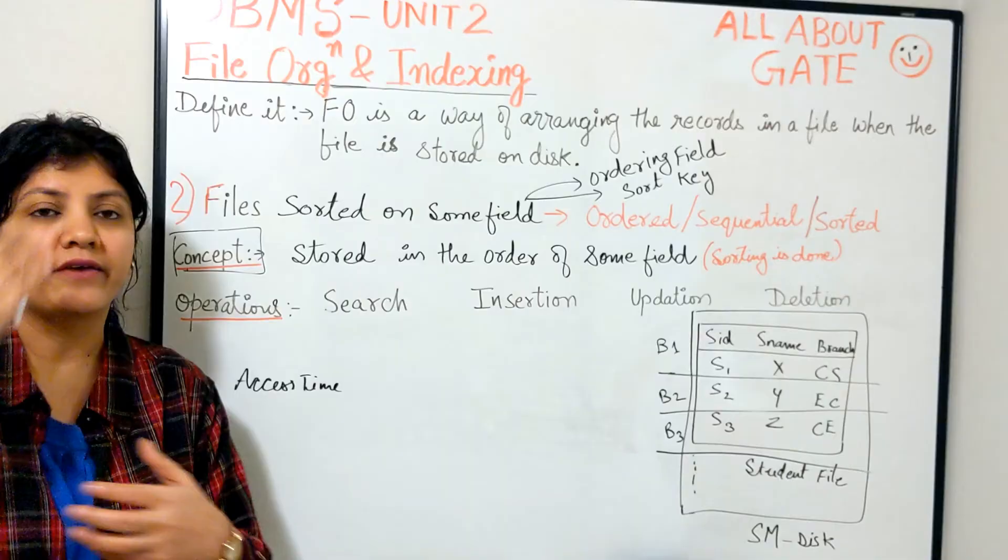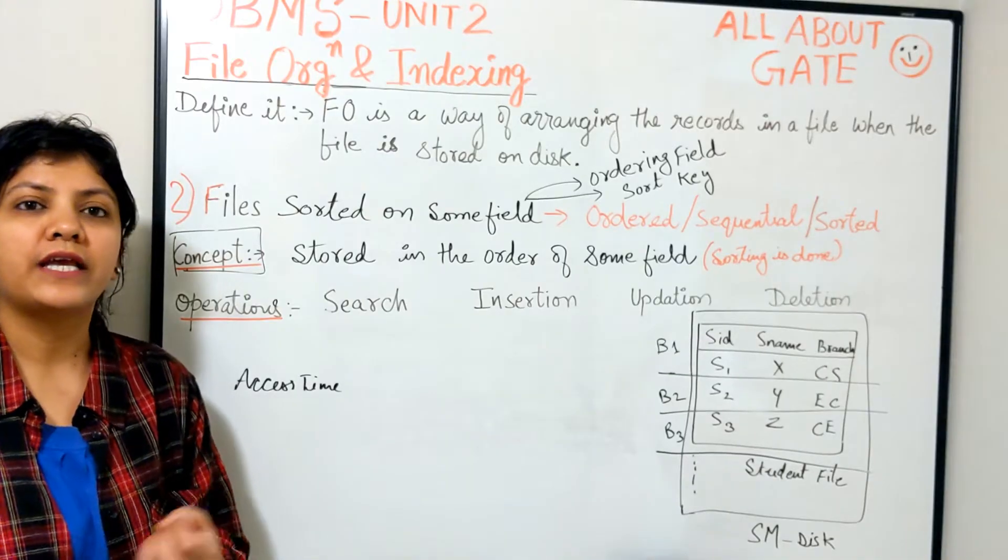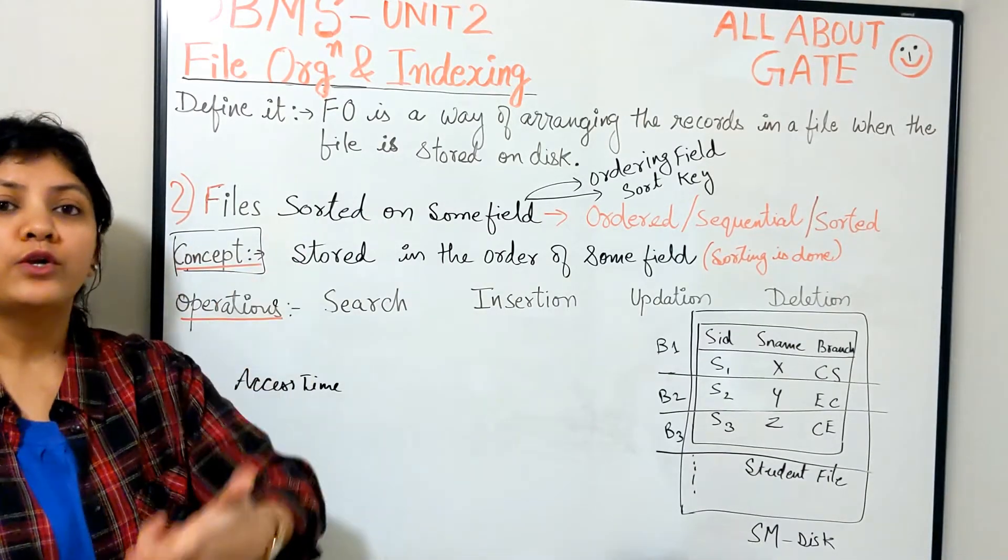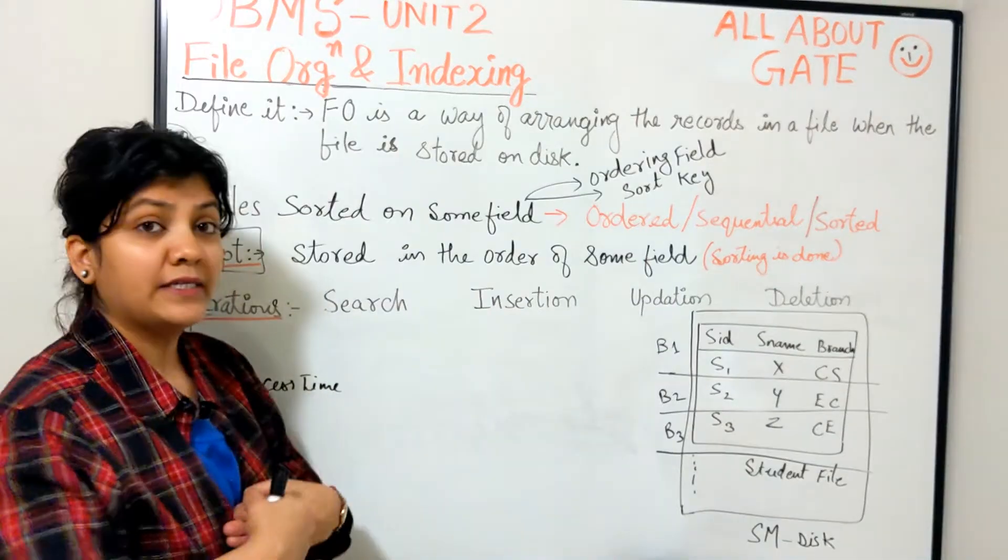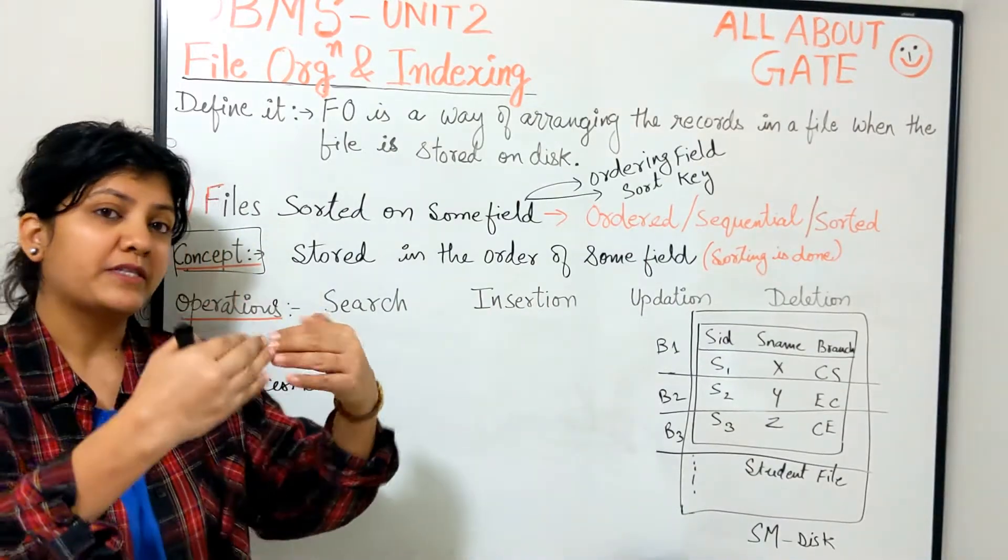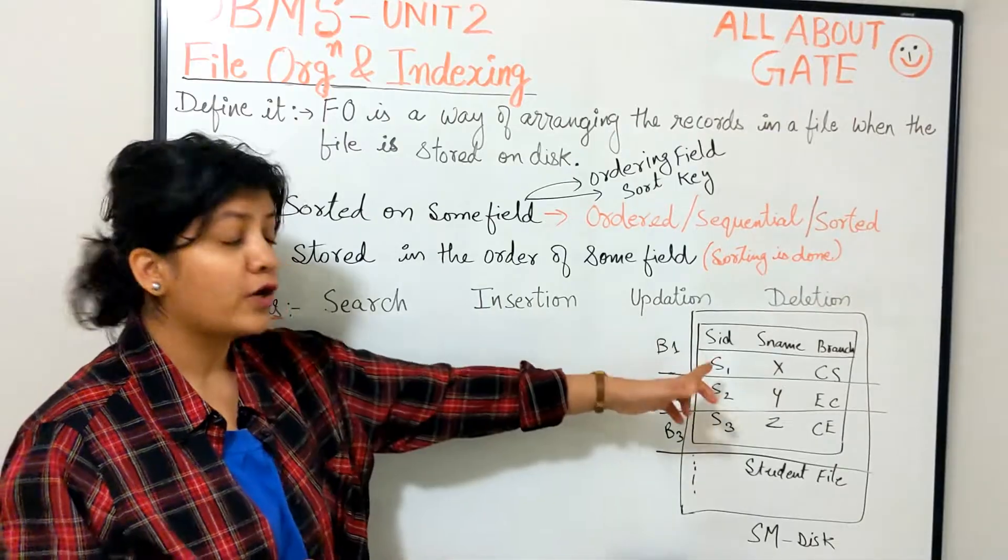In that case you see how you have to look for that particular record. It's known to us, it's known to the DBMS that this file is sorted on the SID, so it just has to perform one search which is the binary search.